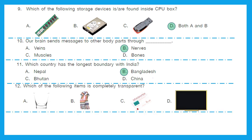Question 12: Which of the following items is completely transparent? Is it glass, scarf, newspaper, or television? We can see that B, C, and D are not transparent — they are opaque, we cannot see through them. Option A, glass, is transparent.